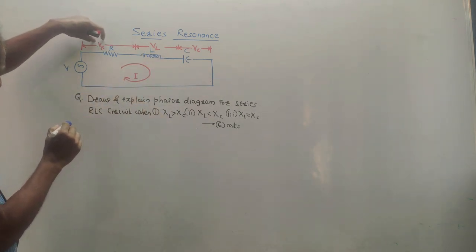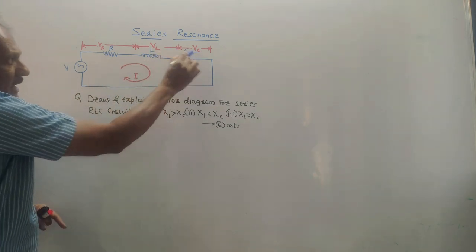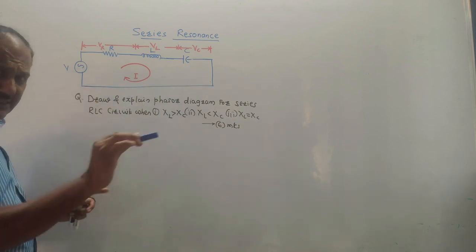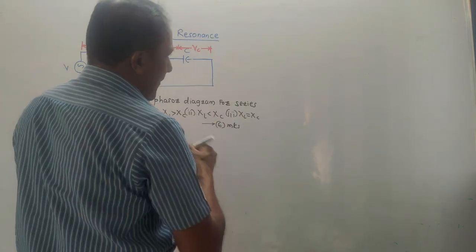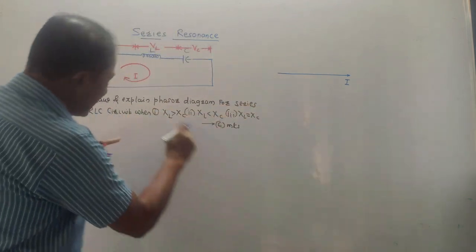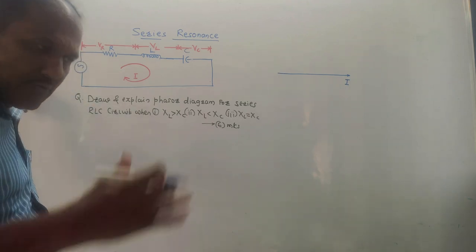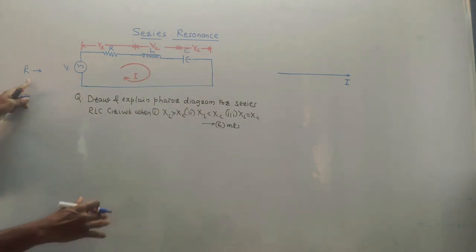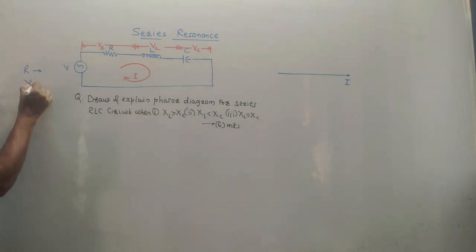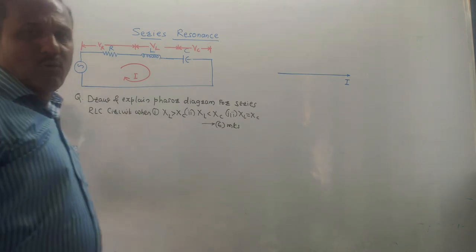The voltage drop across resistance is VR, across inductor is VL, and across capacitor is VC. VR, VL, and VC are the voltage drops across R, L, and C, which have different values, whereas the current flowing through this circuit remains the same — that is I. Now, R stands for resistance. Similarly, for inductor and capacitor, their opposition is denoted by X. Opposition provided by inductor is XL, known as reactance of inductance, and opposition provided by capacitor is XC, known as reactance of capacitance.